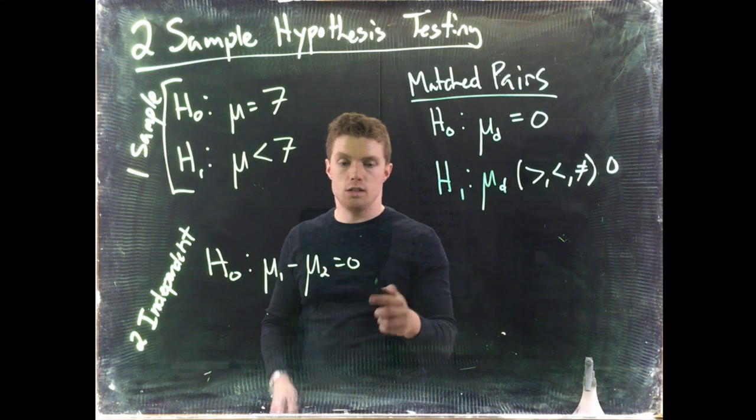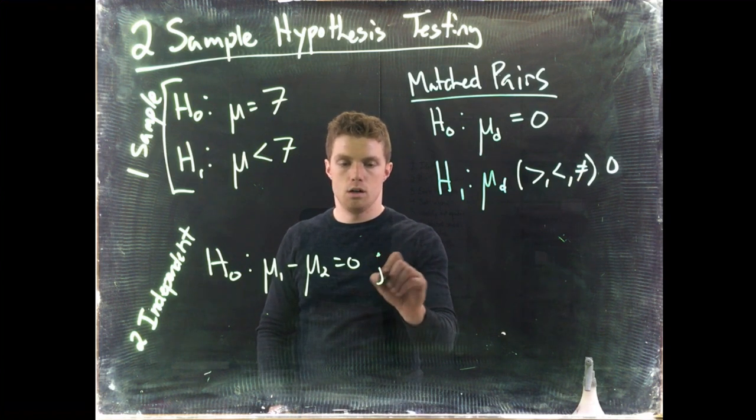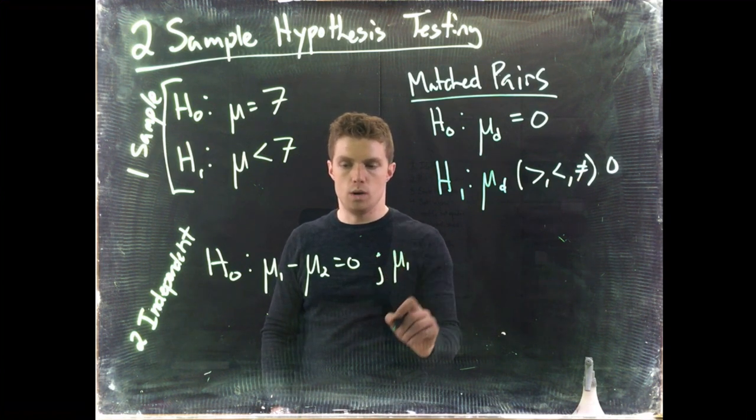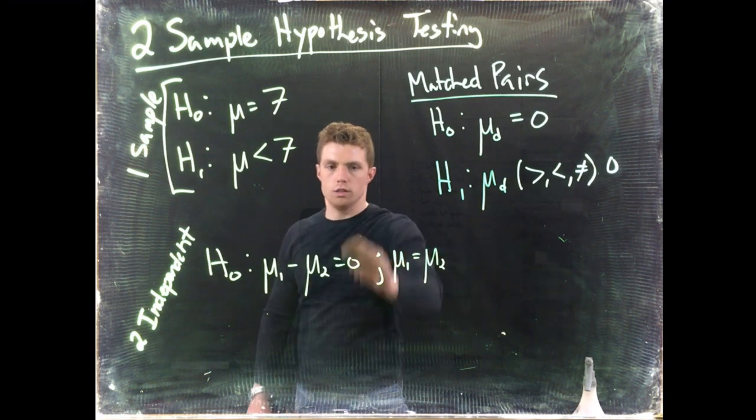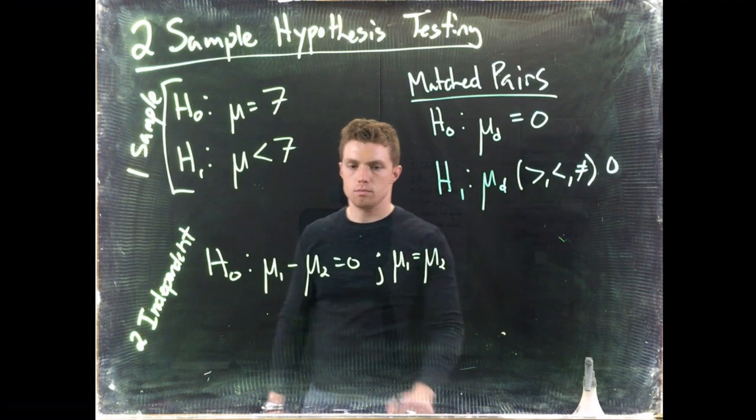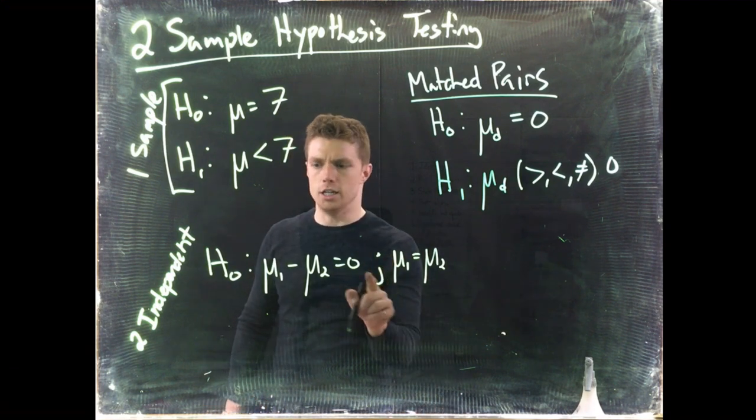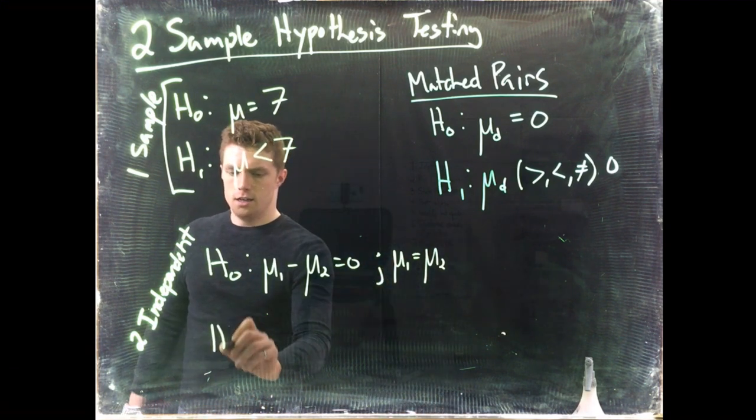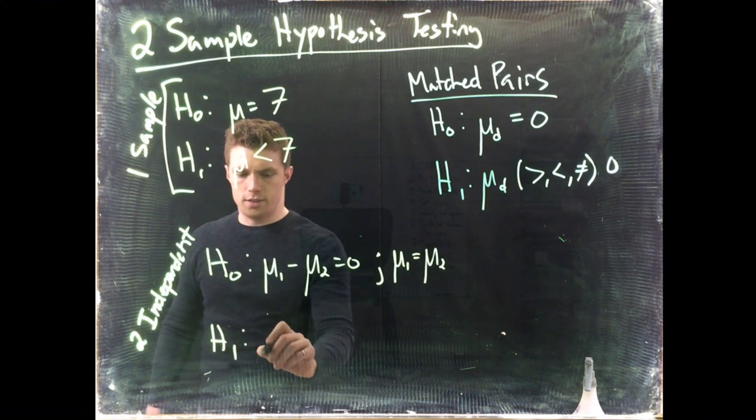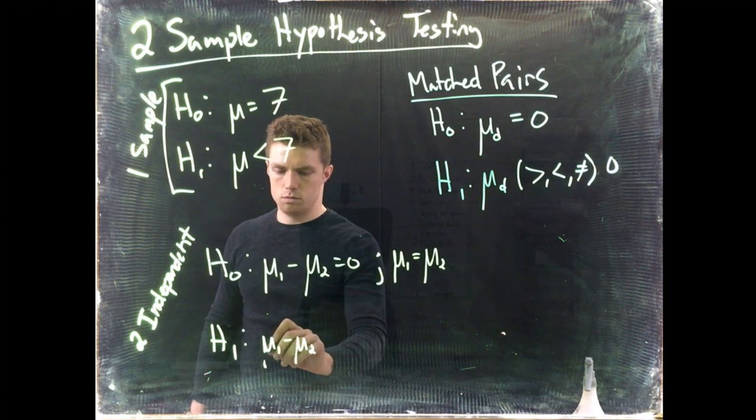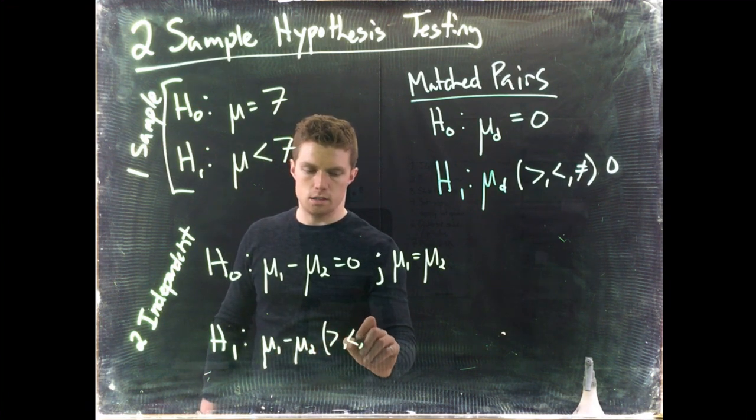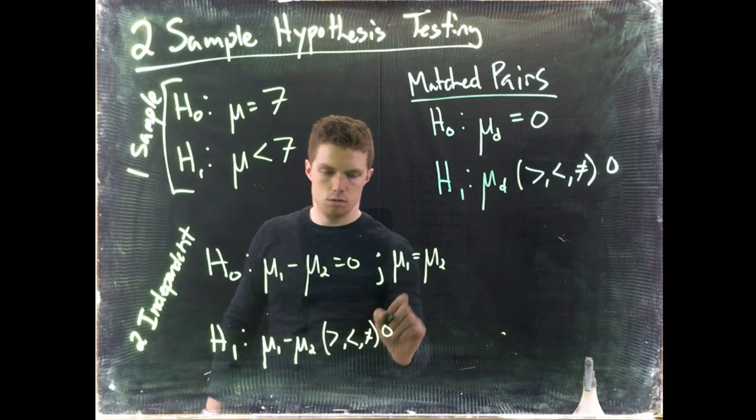However, you will also see it in literature written like this: μ1 is equal to μ2. Just pull it to the other side of the equation. This is a semicolon, not a j, just so you knew that. Okay, and then the alternative hypothesis here is that μ1 minus μ2 is greater than, less than, or not equal to zero.